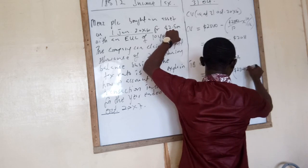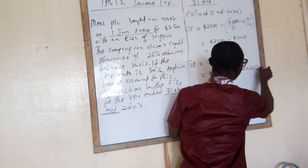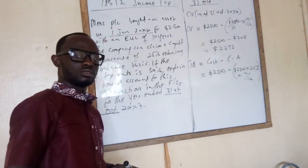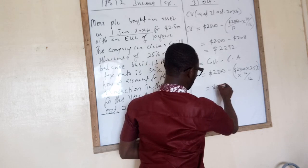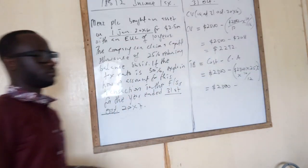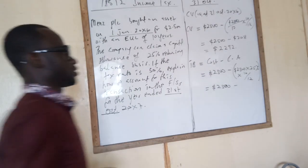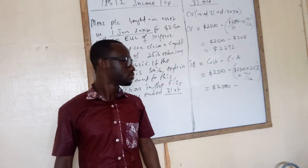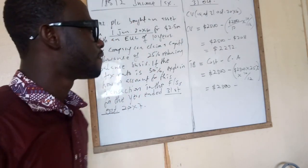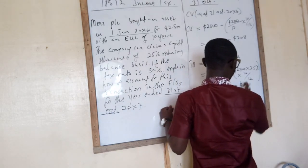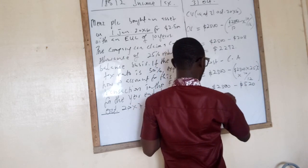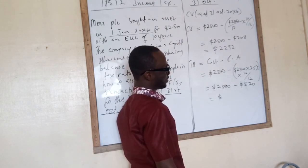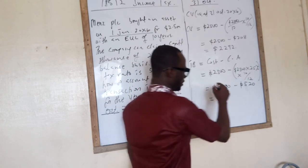The cost is now $2,500. Minus the capital allowance: still $2,500 times 25%. Remember, it's not the full year. So the calculation gives us $2,500 minus $520, which should be $1,980. So the tax base is $1,980.